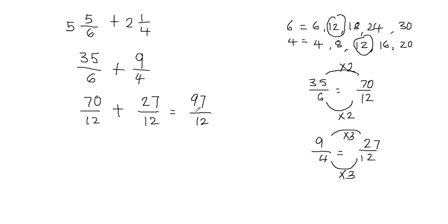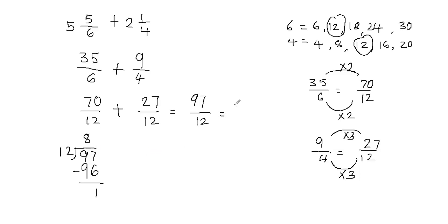This is an improper fraction because the numerator is greater than the denominator, and we cannot leave our answer in this form. So we're going to convert this into a mixed fraction using the long division method. Let's divide 97 by 12. 12 goes into 97 eight times because 12 times 8 is 96, and the remainder is 1. The quotient 8 becomes the whole number, the remainder 1 becomes the numerator, and the divisor 12 becomes the denominator. So my answer is 8 and 1/12.